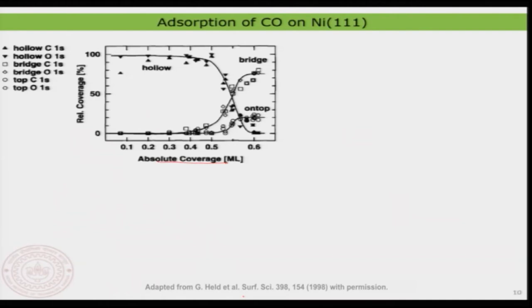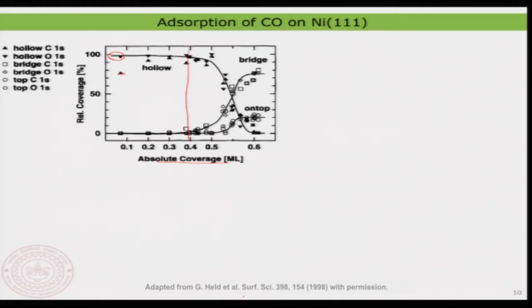I have the absolute coverage in monolayers of carbon monoxide on the nickel 111 surface on the x-axis. At very low coverage, 100 percent occupation is at the HCP site. As you keep increasing coverage and measure XPS spectra, you can plot peak intensity versus coverage. Around 0.4 monolayer, you start to get occupation of the bridge site — the HCP site occupation starts to branch out and decrease.